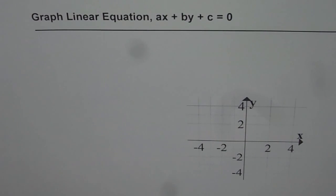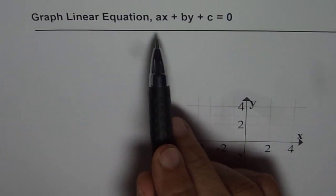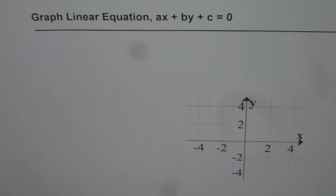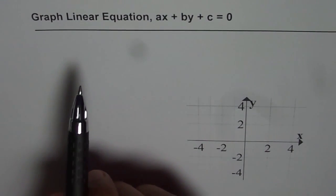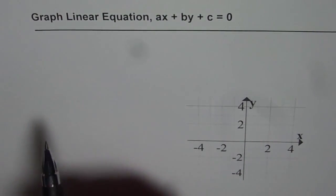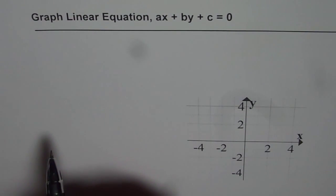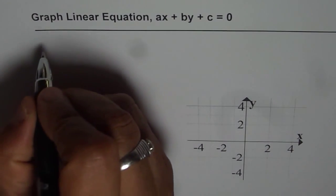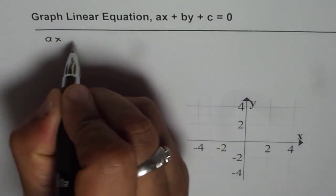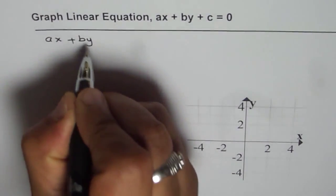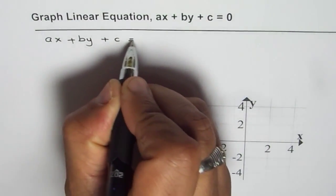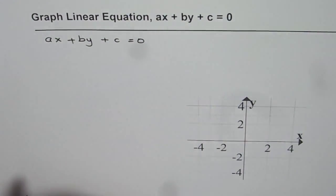I am Anil Kumar and in this video we will learn how to graph a linear equation of the type AX plus BY plus C equals to 0. Whenever a linear equation is given in this form, we say it is a standard form of equation. So a standard form of equation is written as AX plus BY plus C equals to 0. Now how to graph it?